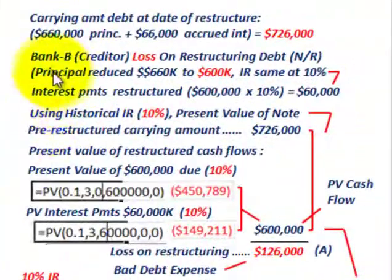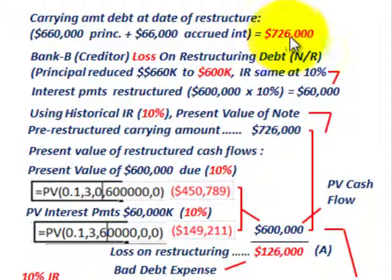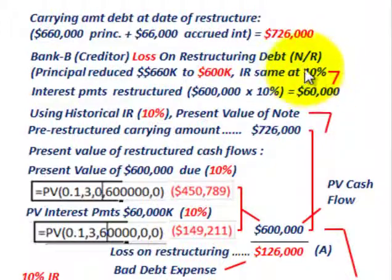Now let's look at Bank B, the creditor, and how they would deal with this restructured loan. The carrying amount of the debt at the date of restructuring is the same: $660,000 principal plus $66,000 accrued interest, so $726,000 — same as the debtor. Bank B is going to recognize a loss in restructuring this note receivable. The principal is reduced from $660,000 down to $600,000, but the interest rate remains the same at 10%. Regardless, they still have to use the historical interest rate when determining the present value.